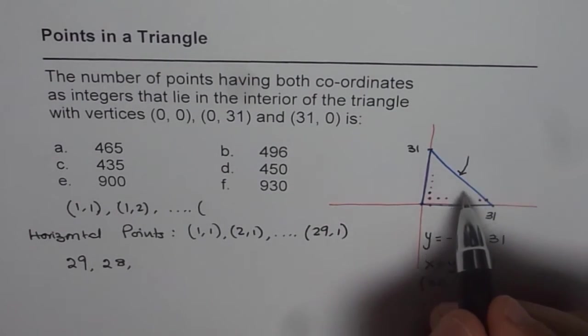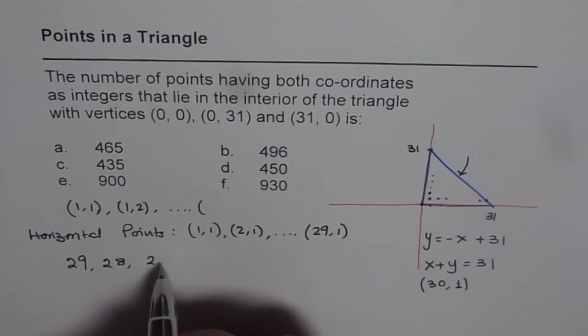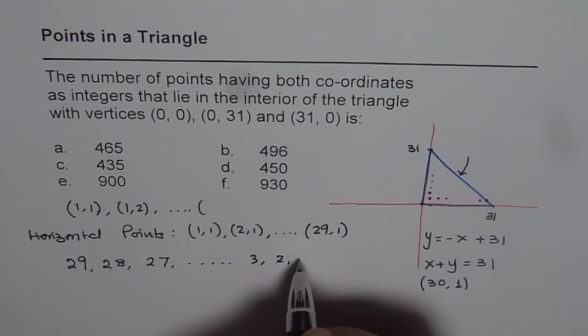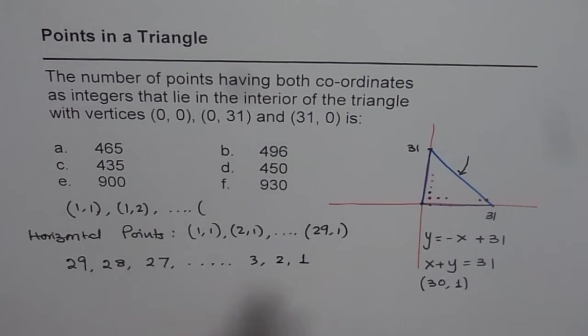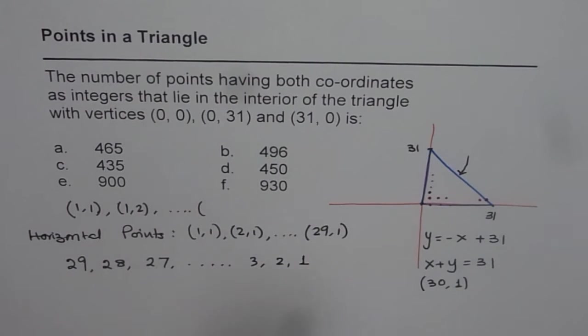And similarly as we move up, these number of points will be reducing by 1 each time. So we will have 28, 27 likewise 3, 2, and 1. So these are the number of points within the triangle whose coordinates will be integer values.